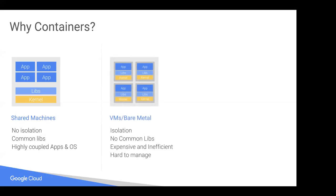To improve on that, we then saw VMs come onto the scene. VMs helped this problem by adding some level of isolation — you can now run the app with its libraries and kernel all separately, so they wouldn't interfere with each other and you wouldn't have dependency conflicts. However, this had a few costs, including fairly large overheads. It was expensive, inefficient, and a little bit hard to manage.